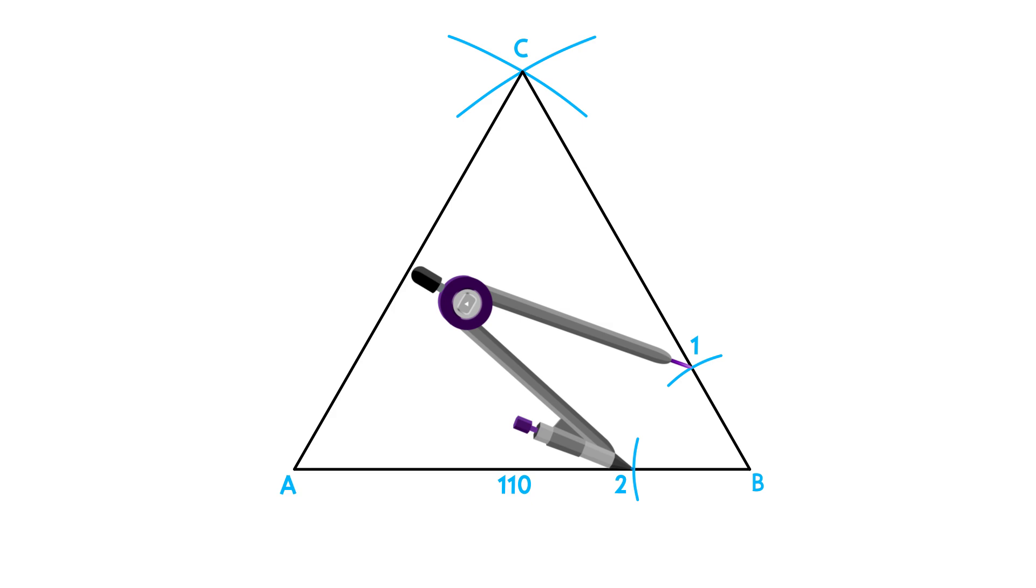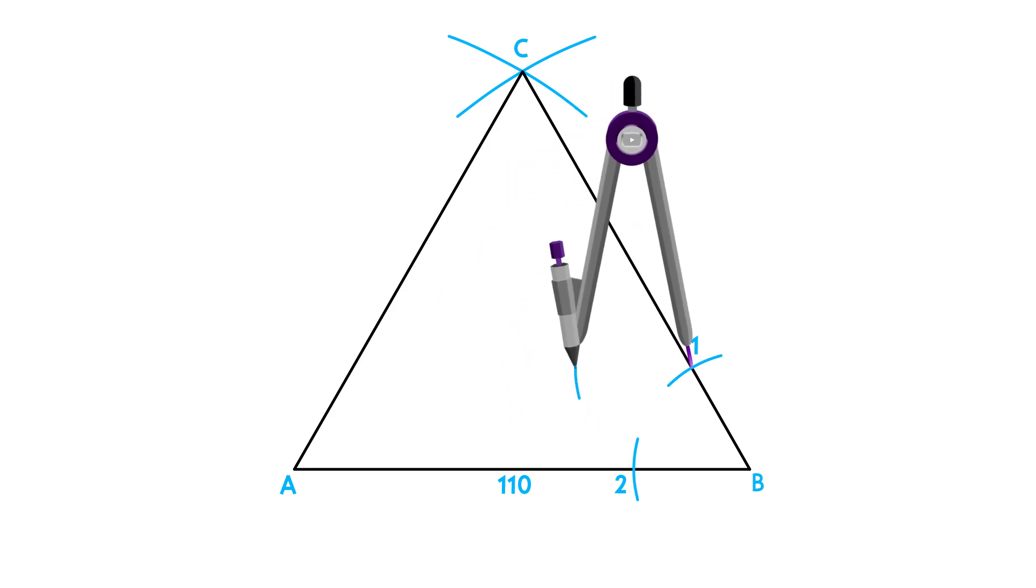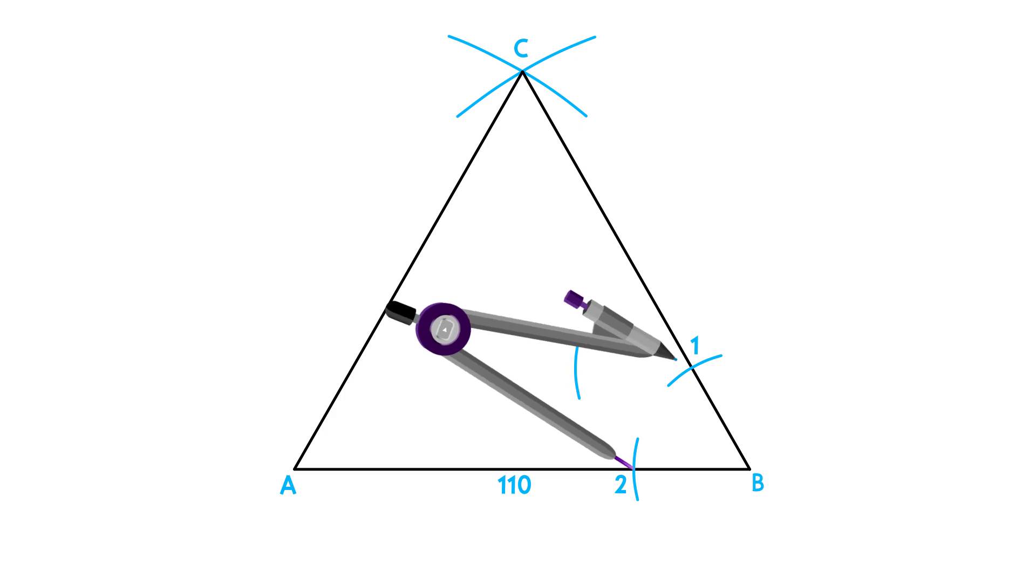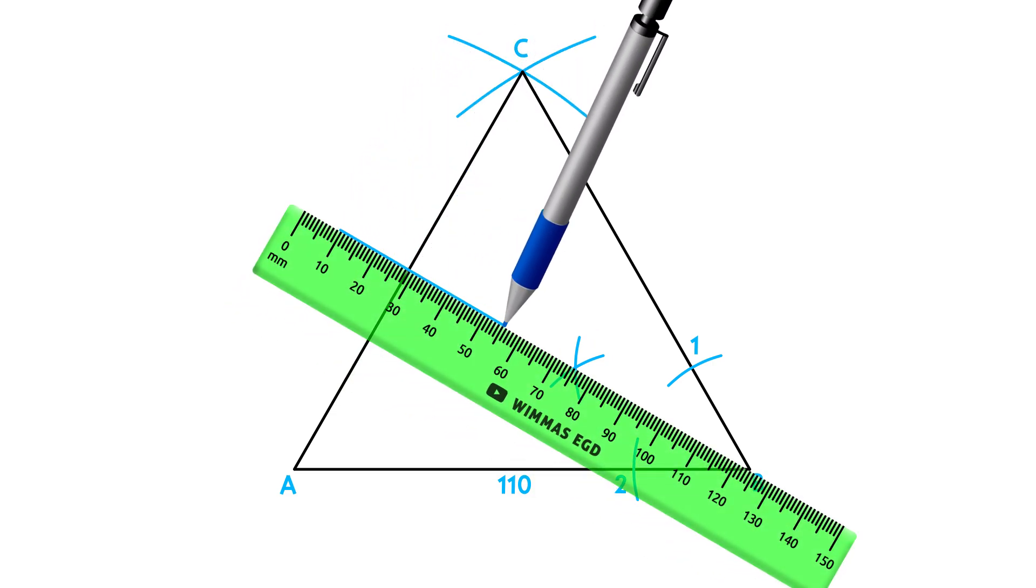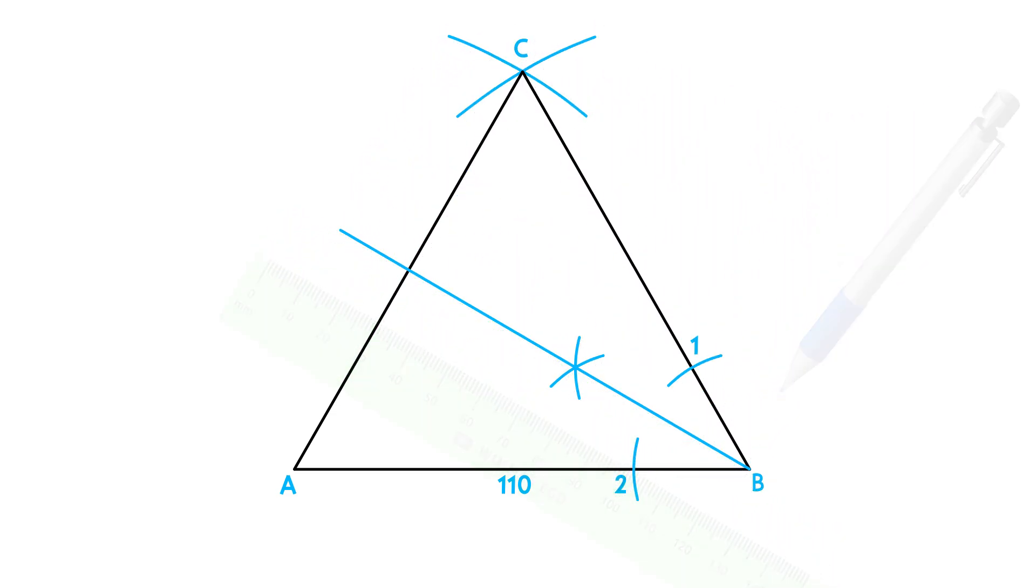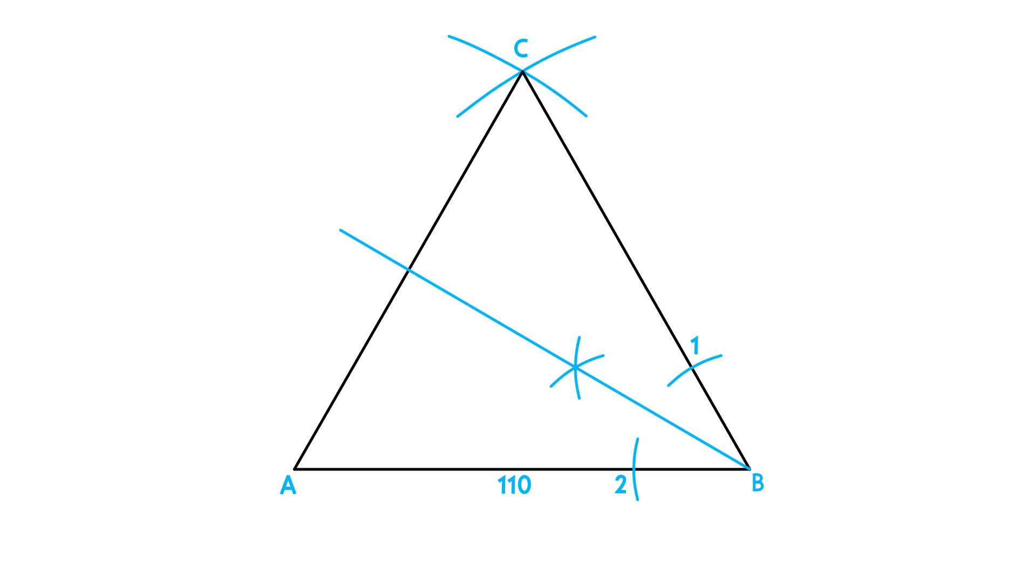Next, place your compass on point 1 and adjust it to point 2. Draw an arc towards the center of the triangle. Using the same measurement, repeat this step on point 2 to intersect the previous arc. Use a ruler to draw a line from point B through the intersection. This is your first angle bisector.